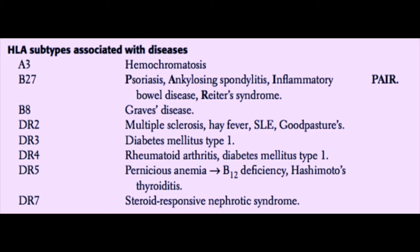HLA-B8, another class 1 MHC, is associated with Graves' disease. DR2 is a class 2 MHC associated with multiple sclerosis, hay fever, SLE (lupus), and Goodpasture syndrome. DR3 is associated with diabetes mellitus type 1. DR4 is associated with rheumatoid arthritis and diabetes mellitus type 1. DR5 is associated with pernicious anemia — a B12 deficiency — and also with Hashimoto's thyroiditis. DR7 has been associated with steroid-responsive nephrotic syndrome.